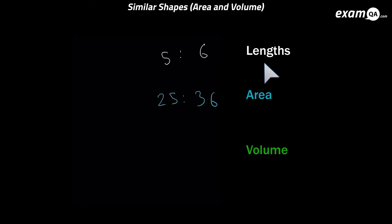Now we can get our volume ratio. And remember from before to get from length to volume you need to cube. The cube of 5 is 125 and the cube of 6 is 216. Okay so let's look at some questions then.